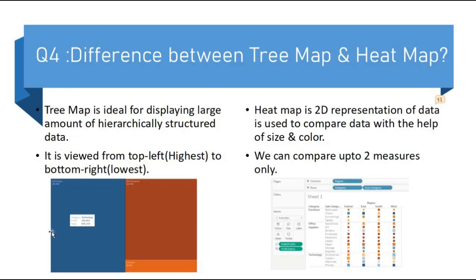The next question is what is the difference between tree map and heat map. Tree map is ideal for displaying large amount of hierarchically structured data. We view the tree map from top left to bottom right. Top left represents the highest value and the bottom right represents the lowest value.